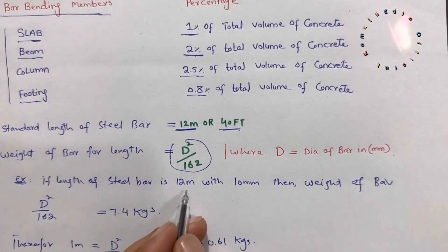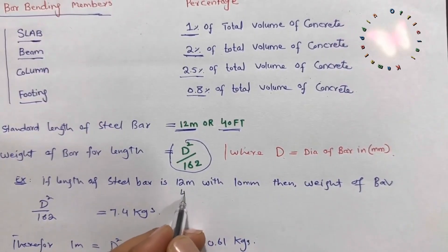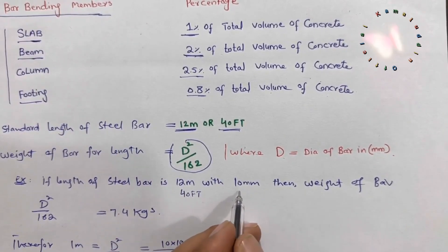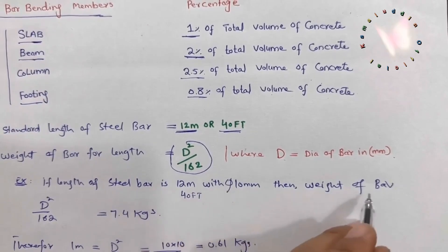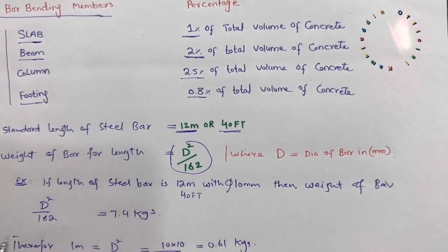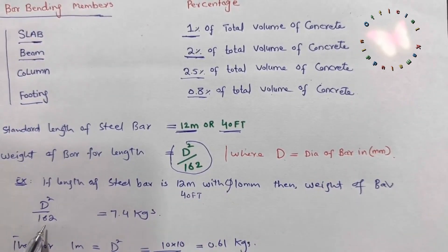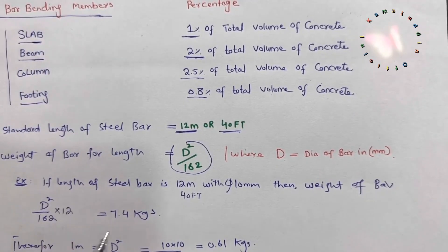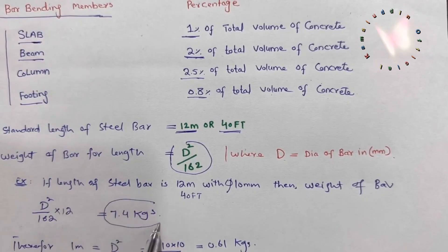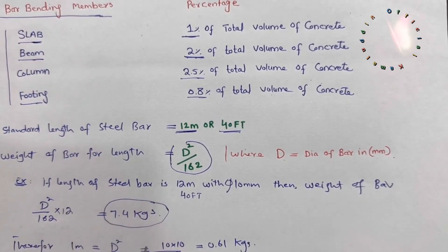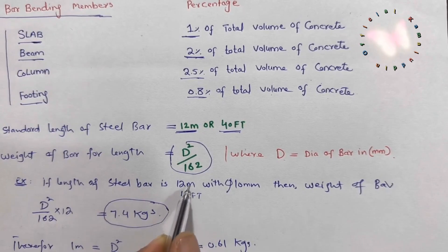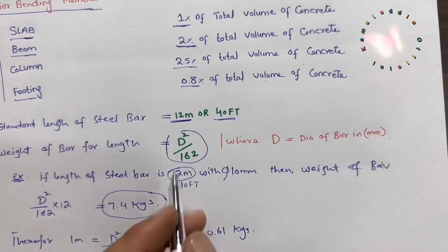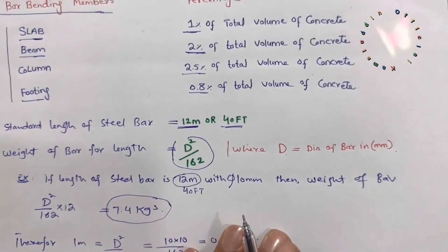For example, if the diameter of the steel rod is 10 millimeters and the length is 12 meters or 40 feet, the weight of the bar is d² ÷ 162 × 12, giving 7.4 kg. So for a 10mm diameter steel rod with a 12-meter length, the weight is 7.4 kg.